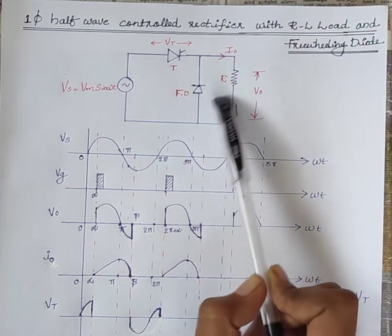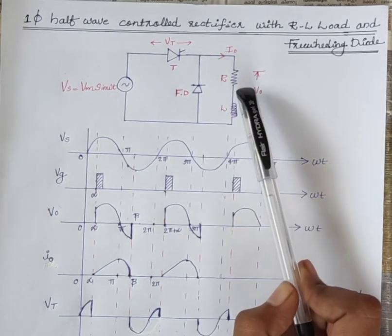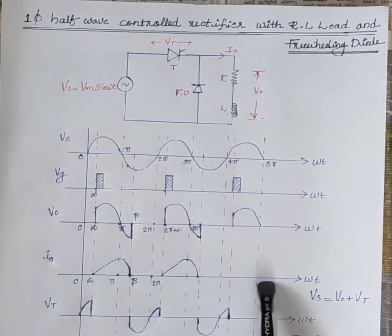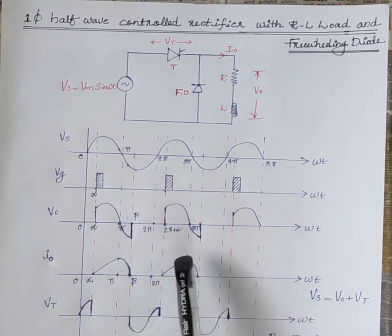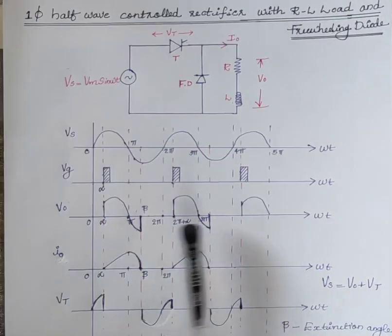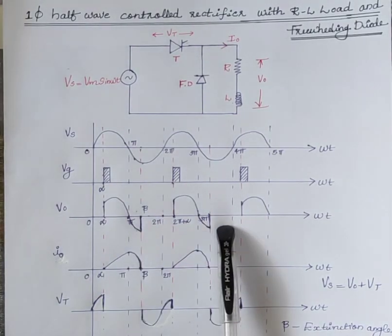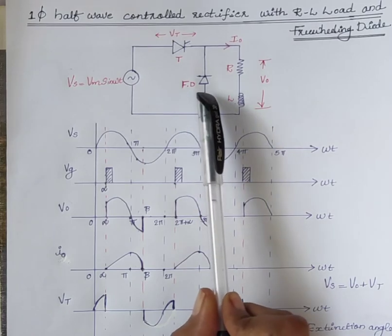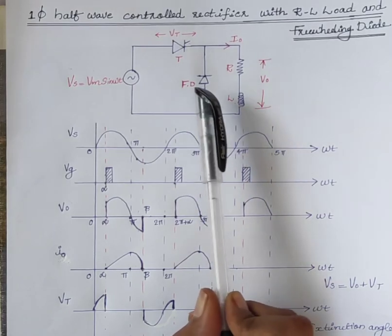This is the freewheeling diode. By using the freewheeling diode, we can improve the load current I0 and also we can remove the negative output voltage. This freewheeling diode is also called a bypass or commutating diode.